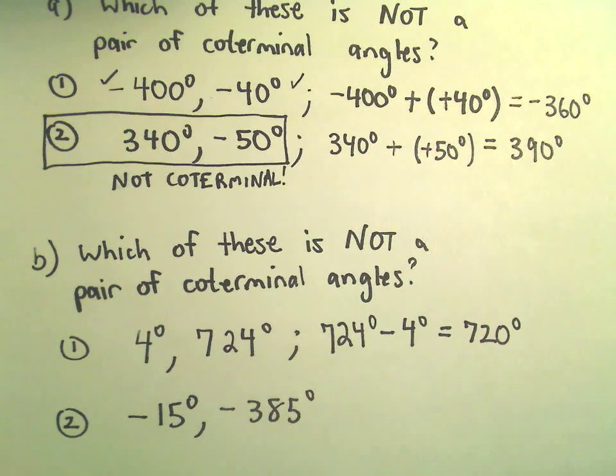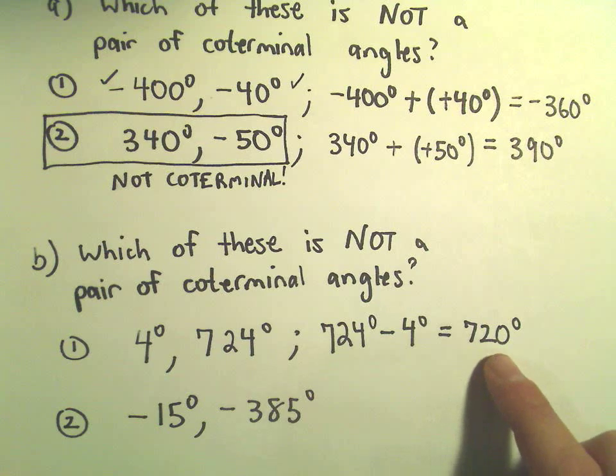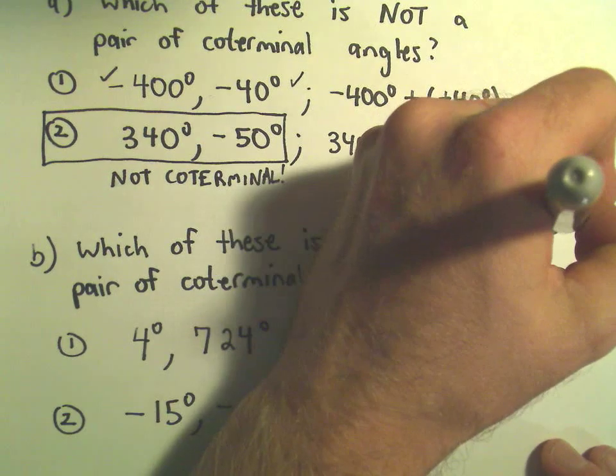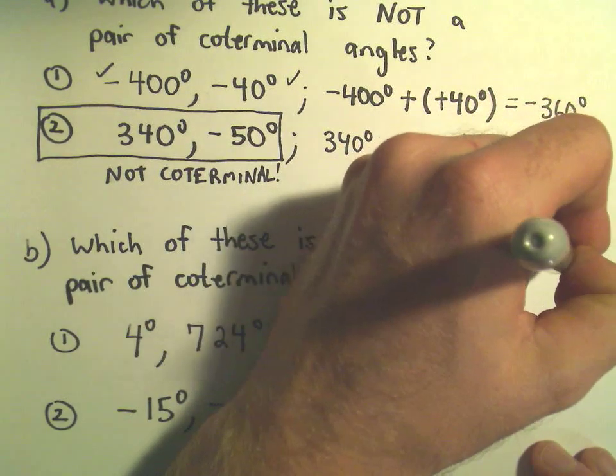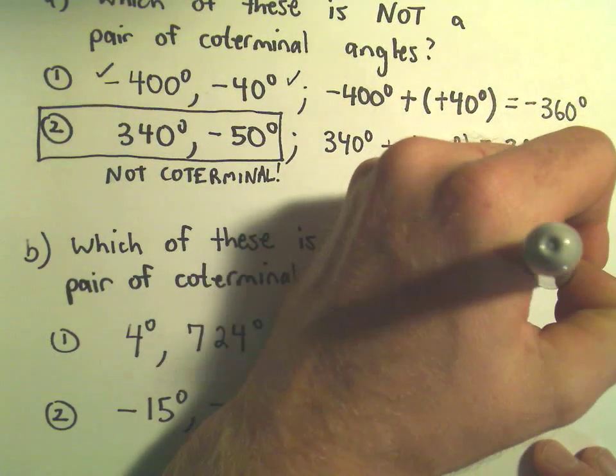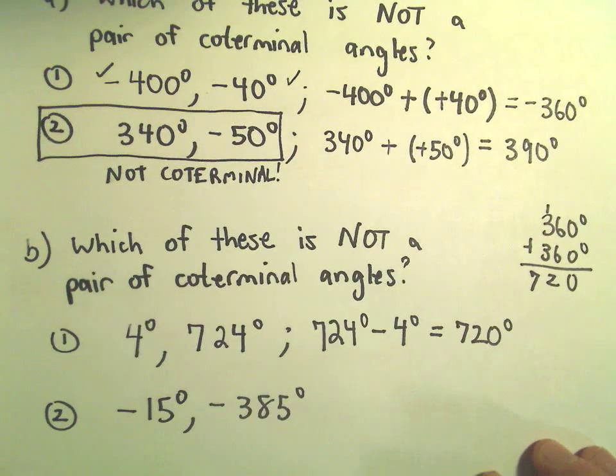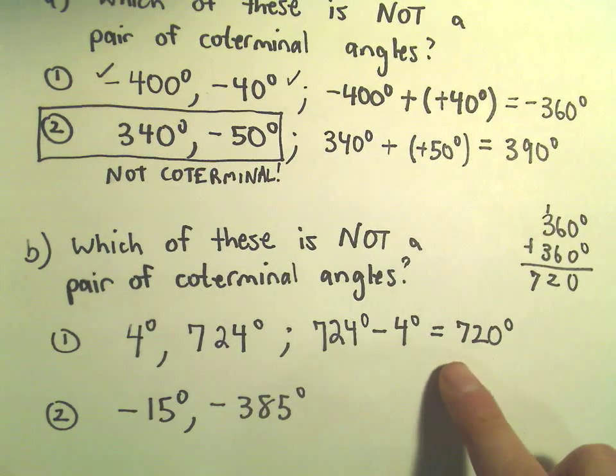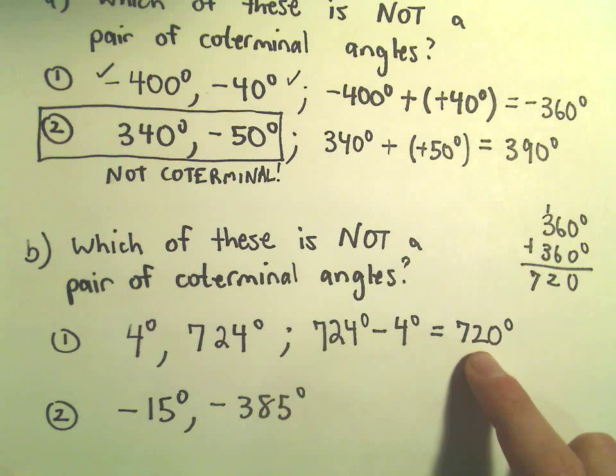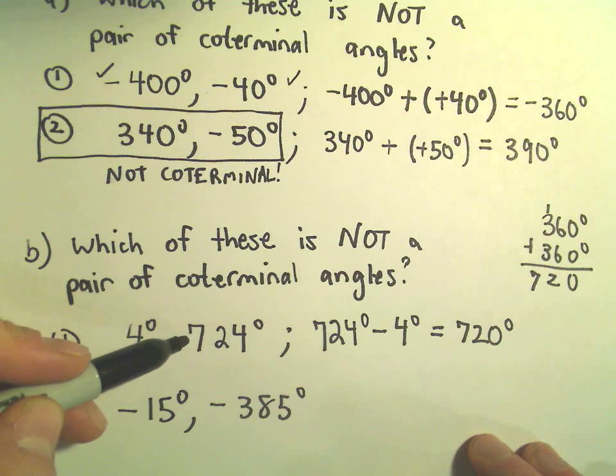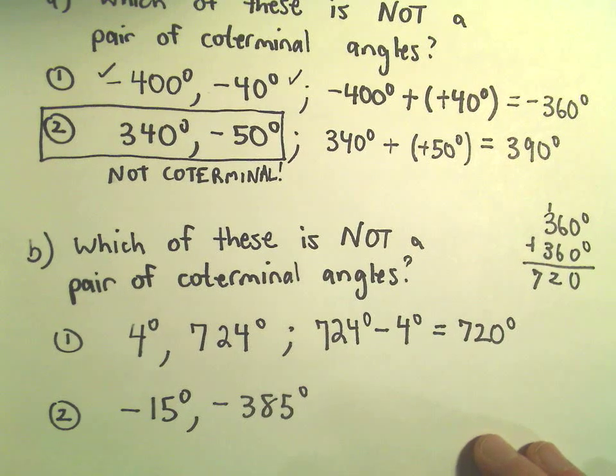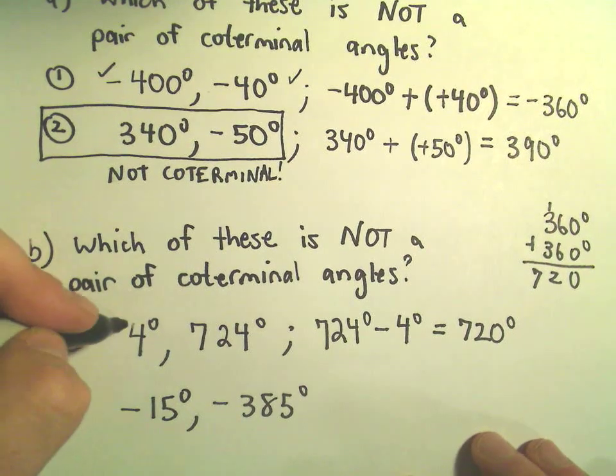So now the question is, is 720 degrees a multiple of 360? Well, 360 plus another 360 gives us 720. So 720 is just two times 360. That is a multiple, so the angles 4 degrees and 724 degrees are coterminal.